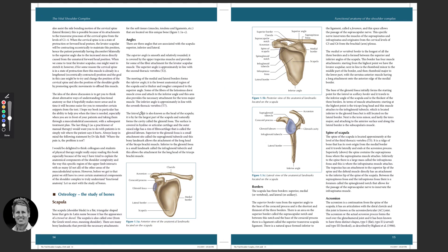The lateral angle is basically where the glenoid fossa is — the socket where the humeral head fits. The superior angle is where the main insertion point will be for the levator scapulae. Then we've got the inferior angle, and part of the latissimus dorsi will cross over this area.